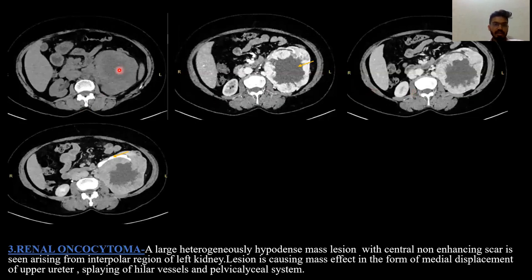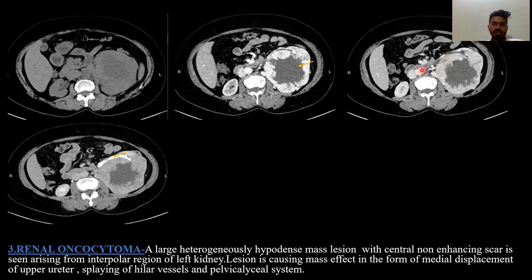Third case: Renal oncocytoma. There is a large heterogeneously hypodense mass lesion with a central non-enhancing scar seen arising from the interpolar region of the left kidney, which is heterogeneously enhancing. The lesion is causing mass effect in the form of medial displacement of the upper ureter, splaying of the hilar vessels and PCS system.